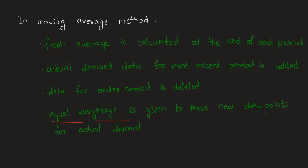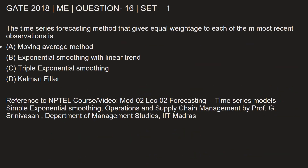Let's go back and mark the option containing this answer. The answer is option A. In time series forecasting, the method that gives equal weightage to each of the most recent observations is the moving average method.